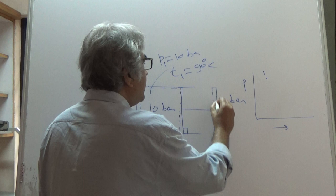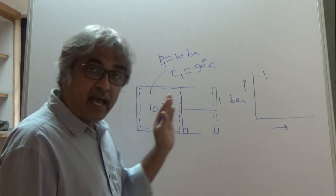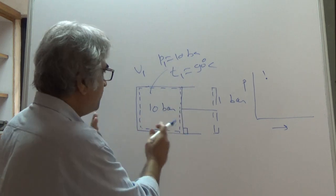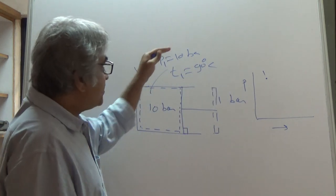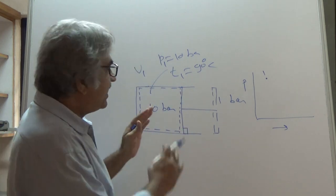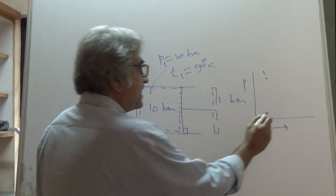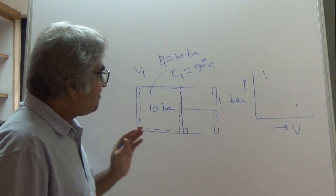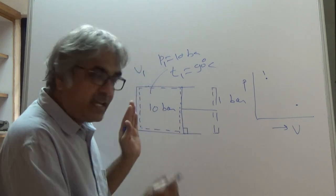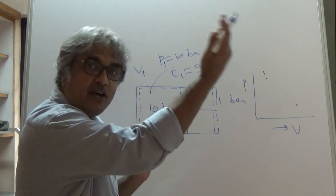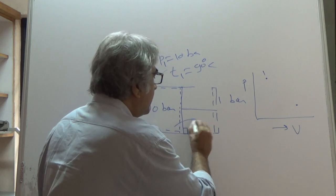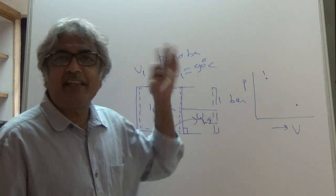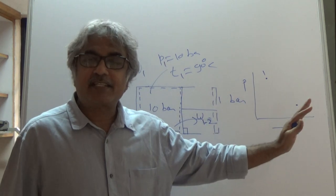Now suppose I remove this stopper — what will happen? The gas would expand and keep on expanding. The cylinder moves and the gas has expanded to a new volume. The pressure will drop and maybe temperature will also change. The system has moved to a new equilibrium state, State 2. During this process there is a work transfer W12 — let's say 10 kilojoules of work is transferred to the surrounding.